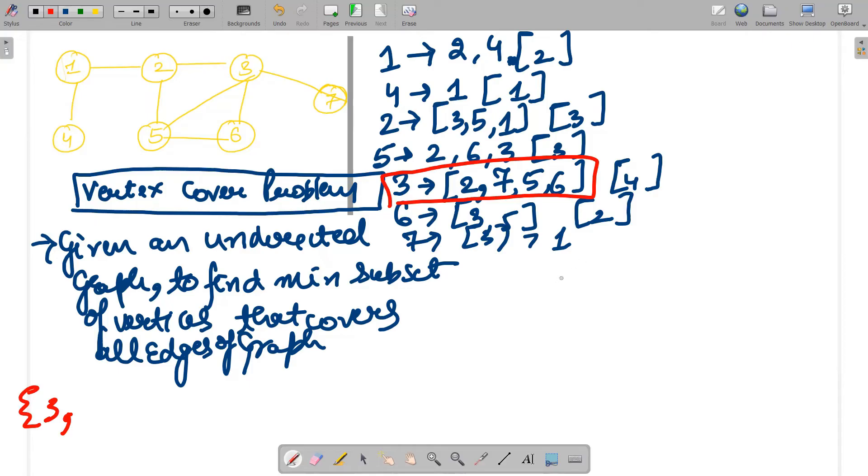So what we will do, we will exclude all the edges with 3 and create the graph accordingly. So we will have 1, 1 is connected to 2 and 4, right?